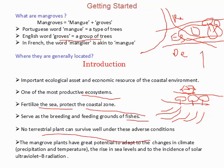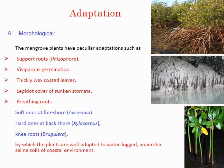No terrestrial plant can survive in the adverse conditions of the mangrove zone, because there is huge salinity — around 35 ppt from the saline ocean water — mixed with river fresh water. This hostile, mixed condition means no other plant can survive here. However, mangrove plants have great potential to adapt to climate change, rising sea levels, and increased solar radiation.